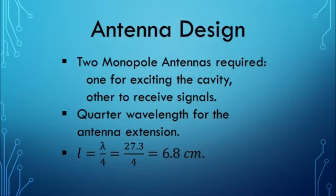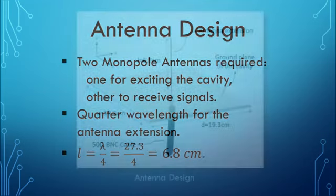Two monopole antennas are needed for the cavity — the first antenna to excite the cavity, in other words to fill the cavity with waves, and the other one to detect the waves. Antenna length is quarter the wavelength, so it results in 6.8 cm for 1.1 GHz. For safety margin, I initially cut a longer antenna and then tuned it by clipping or shortening it.